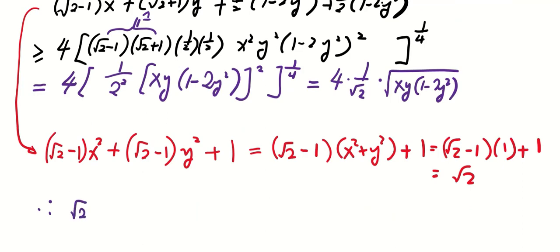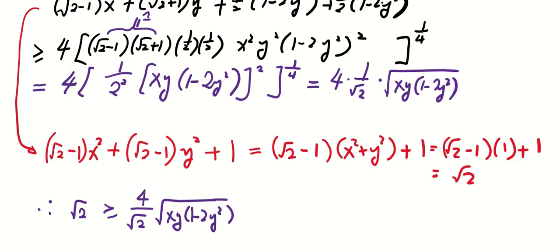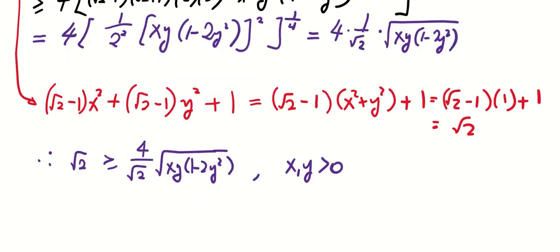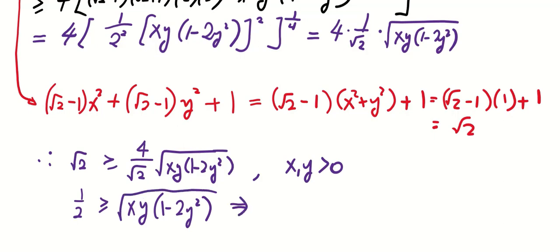So now we have sqrt(2) is greater than or equal to (4 / sqrt(2)) times the square root of [xy(1 minus 2y squared)]. Note that in this case we only consider positive x and positive y. By calculation, this inequality is equivalent to 1/2 being greater than or equal to the square root of [xy(1 minus 2y squared)], and therefore 1/4 is greater than or equal to xy(1 minus 2y squared).